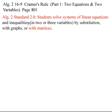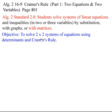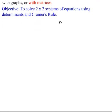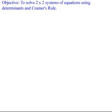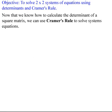We solved two equations, two variables, by graphing, by substitution, by linear combination at the beginning of the year. Now we've been working toward learning how to find determinants of matrices. Today's objective is to put those determinants to work with something called Cramer's Rule and actually find the solutions to these two-by-two equations. We're finally covering everything there is to Standard 2.